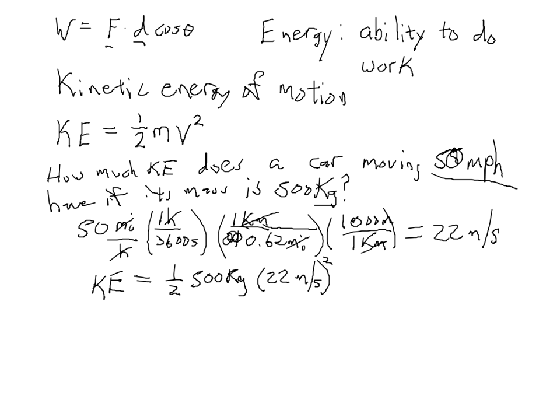And if you type that into your calculator, 22 squared times 500 is 242,000. We divide that by 2 and you get about 121,000 joules or 1.2 times 10 to the 5 joules.